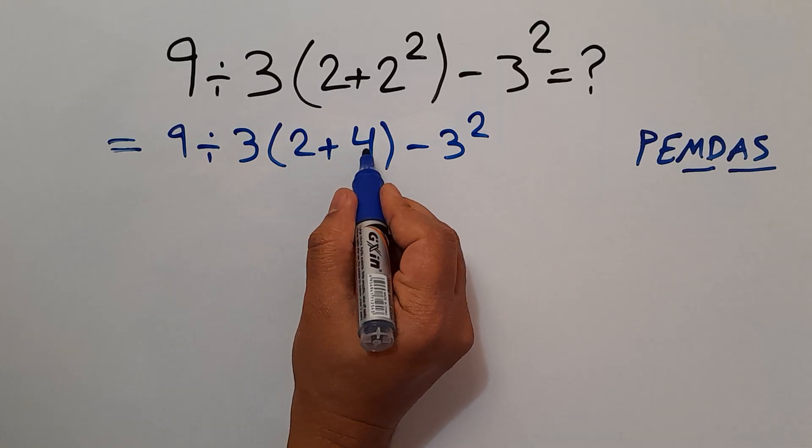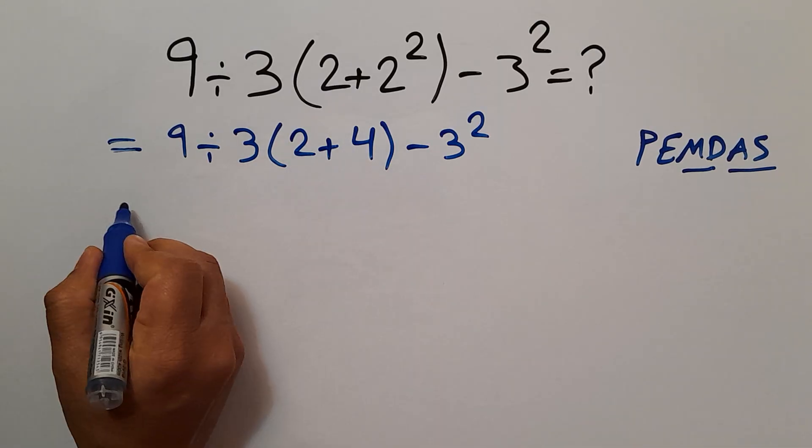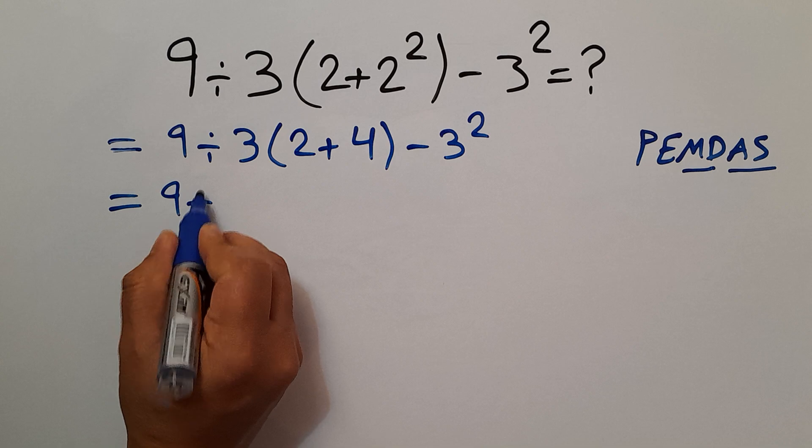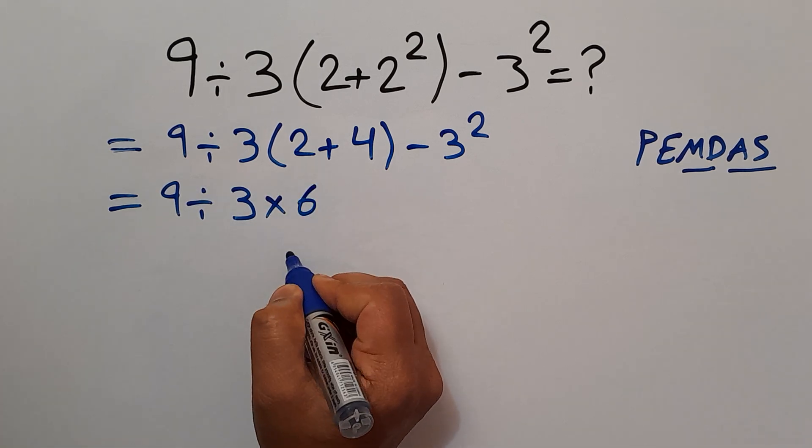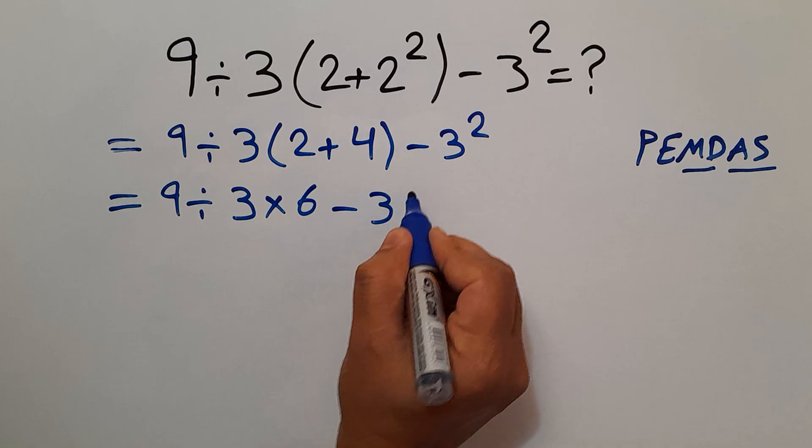Now 2 plus 4 gives us 6, so 9 divided by 3 times just 6 minus 3 squared.